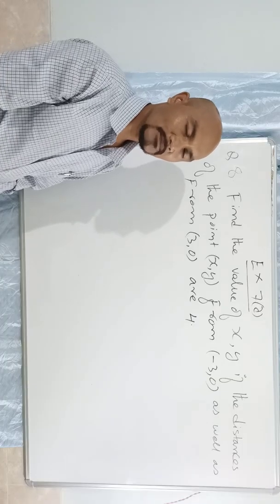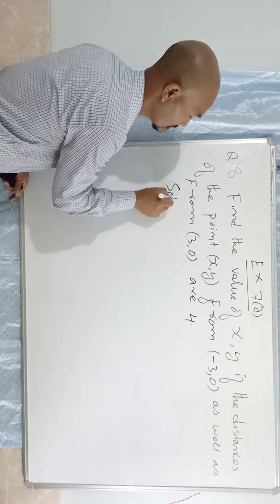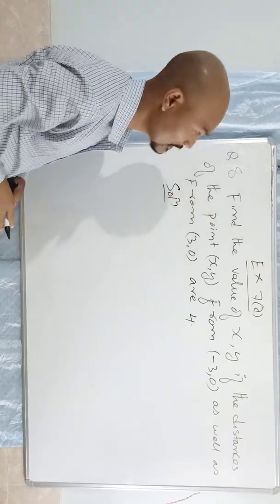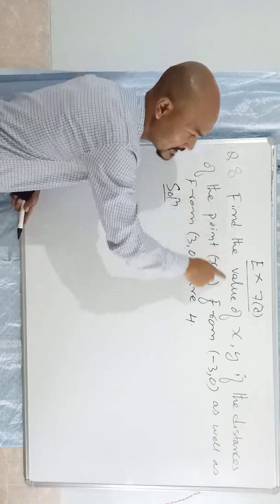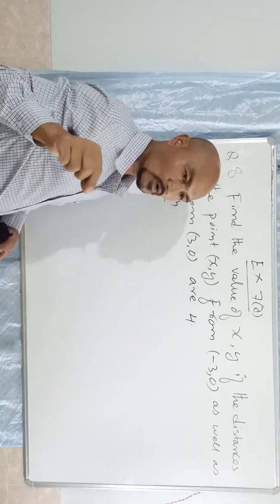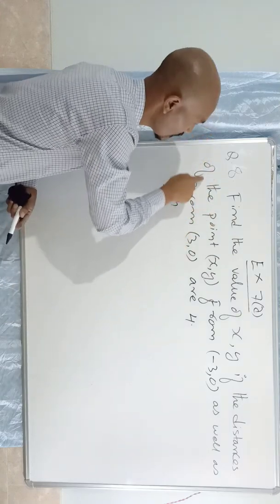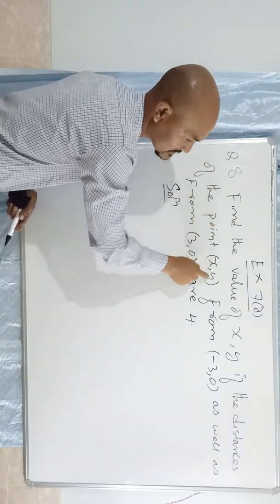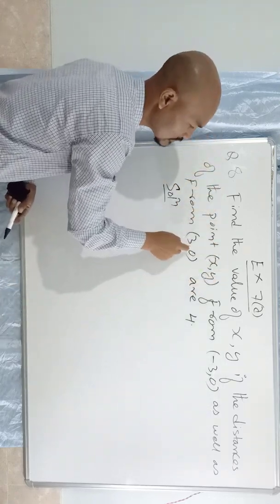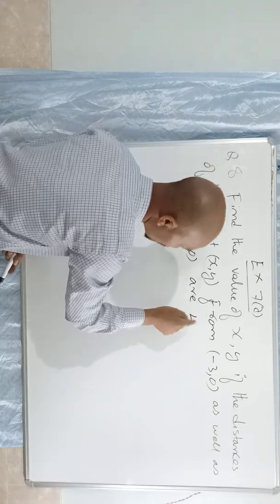I'm going to take a look at the position of x and y. What I'm saying is not the split between X and Y — whether or not making a difference under X from Y, or Y minus 3,0 as well as from 3,0, are 4.